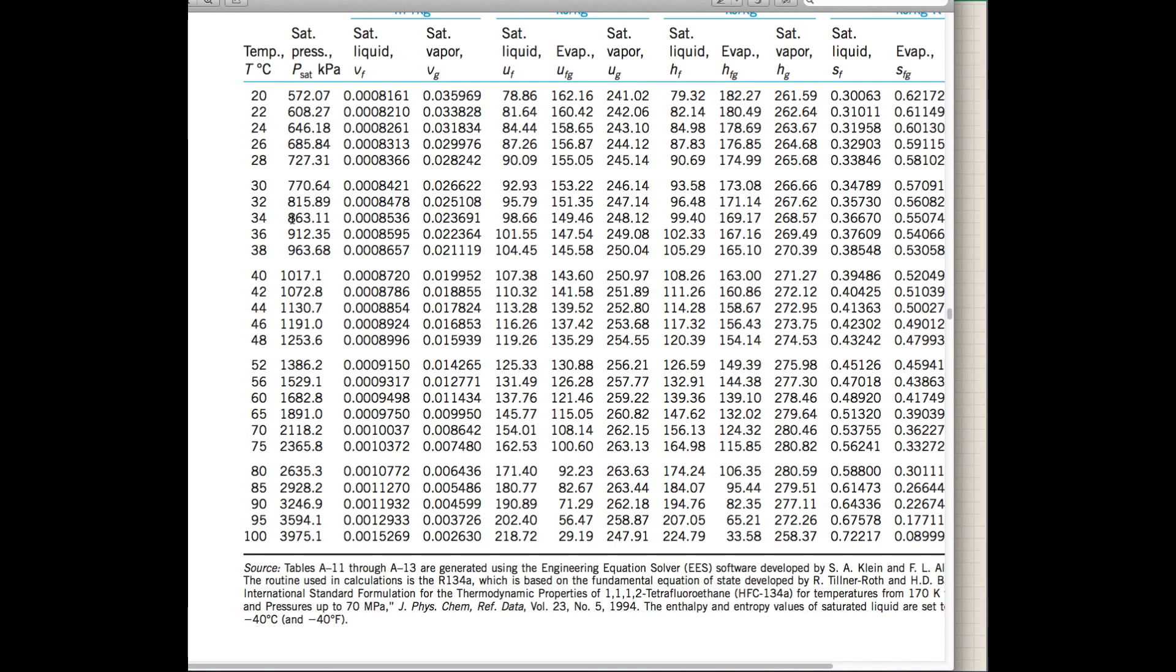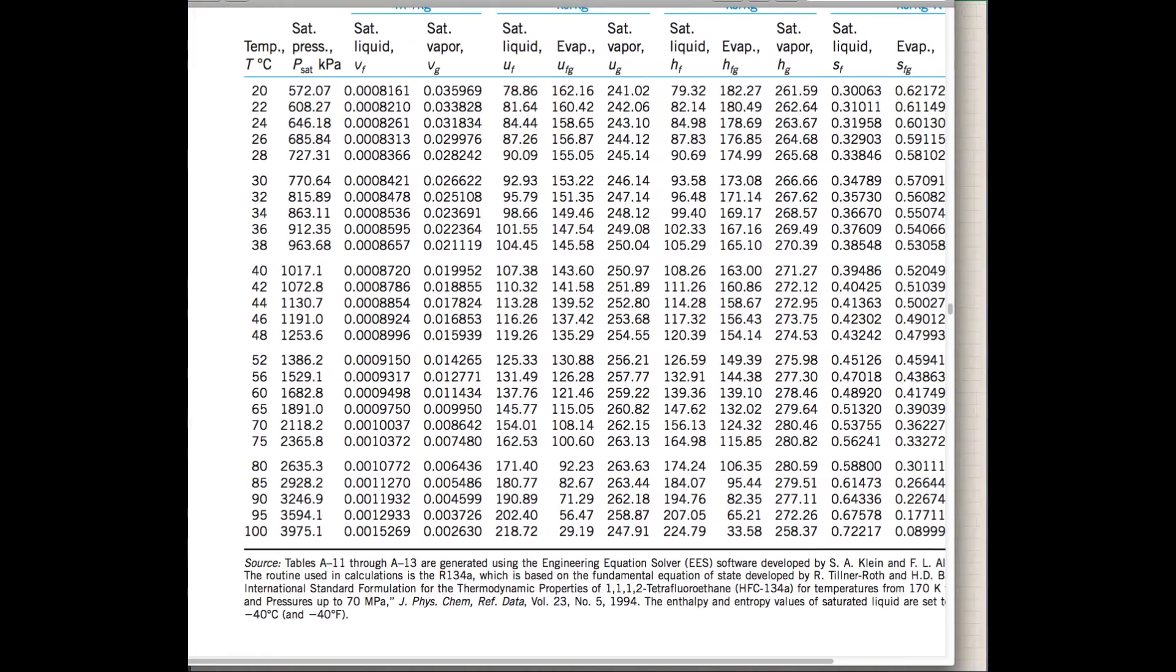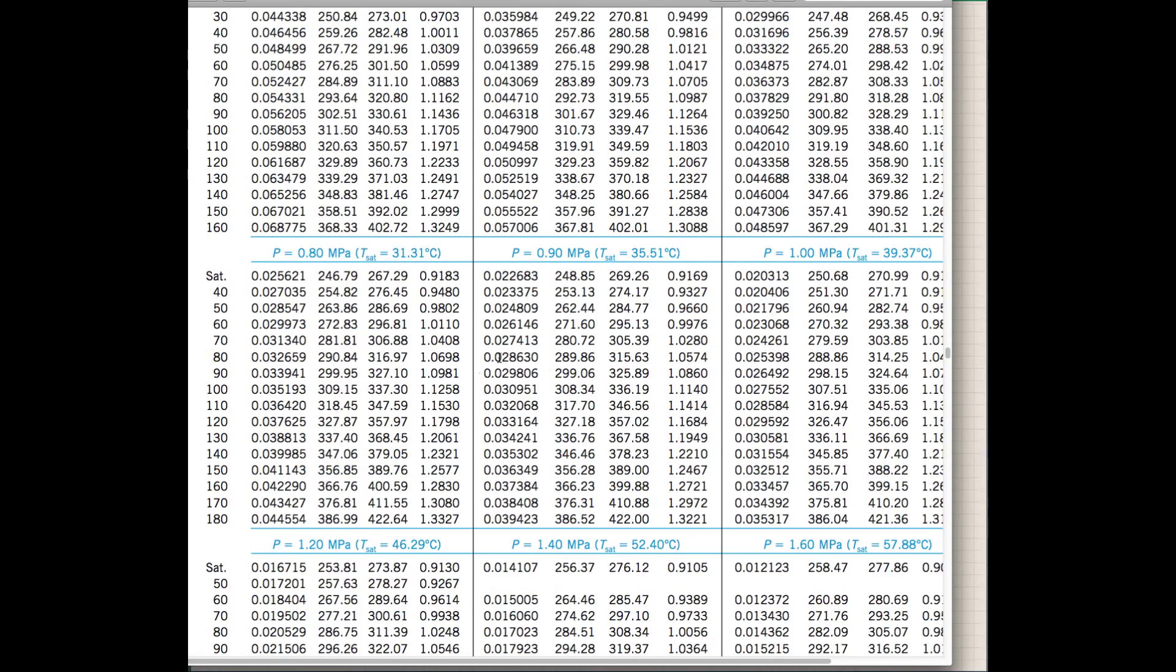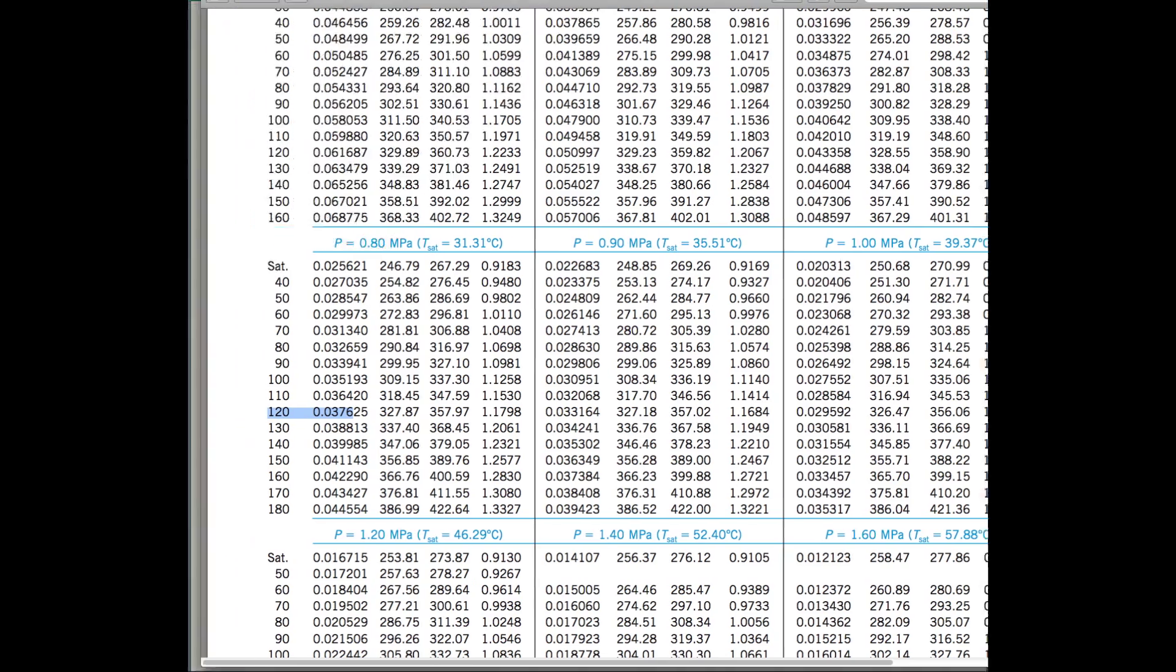That's one way that we can check to make sure that we're using the right tables. We're way over here on the superheated vapor section. We know now we need to use the superheated vapor tables. Let's go ahead and use them. For a pressure of 800 kPa, which is 0.8 MPa, we have a temperature of 120, so our specific volume at this condition is 0.037625 meters cubed per kilogram. You can see that here. I've highlighted it there on the table.